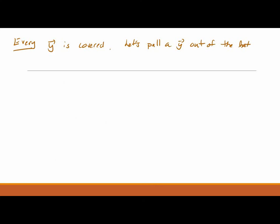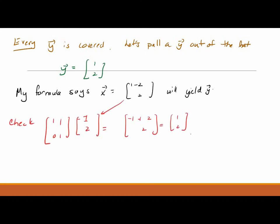So let's do this with numbers. Let's just pull a y out of the hat. Let's pull that one. y equals one, two. Is there an x that gives me that y as an answer? My formula says the x has to be y1 minus y2 and y2 in the second component. So let's see if that works. Let's put it in there. And it does. This time I didn't make a mistake. So this x yielded that y. So that formula is telling me no matter what y I pull out of the hat, I've got a formula that will give me an x that will send it to that y. So it's onto by definition.